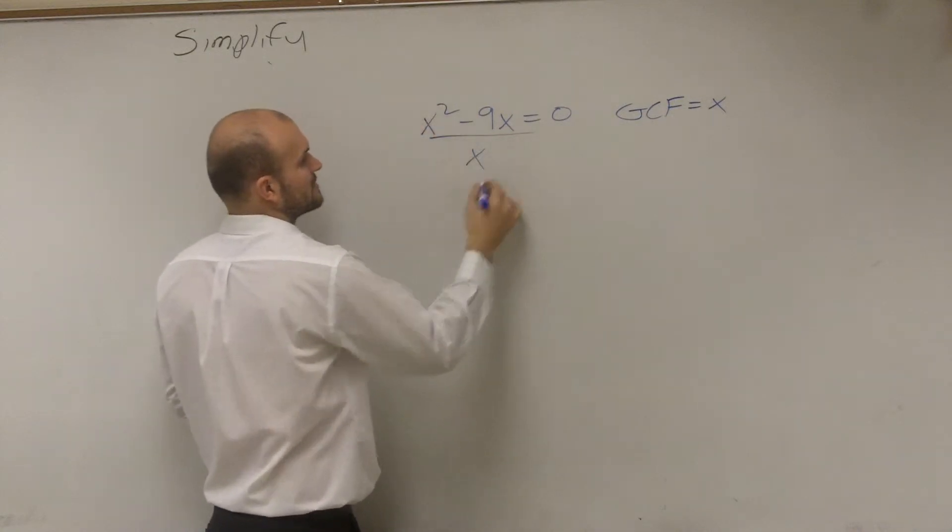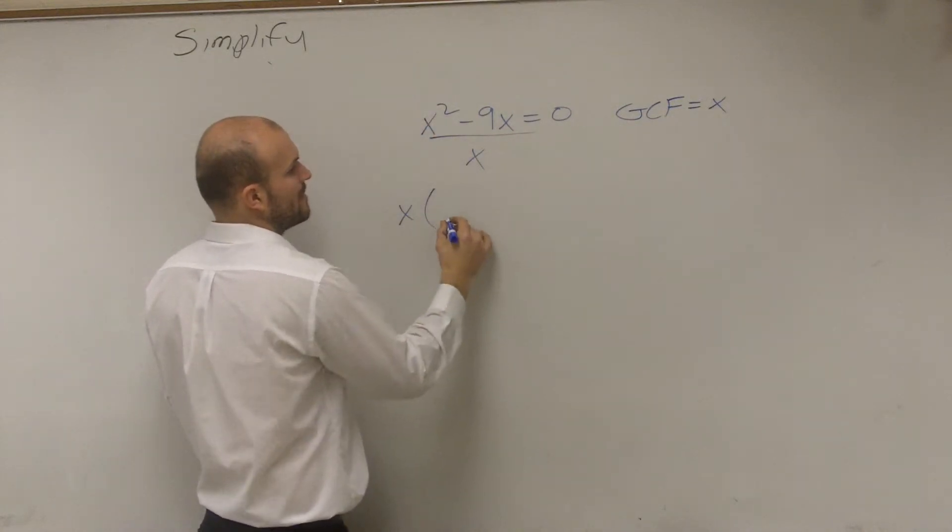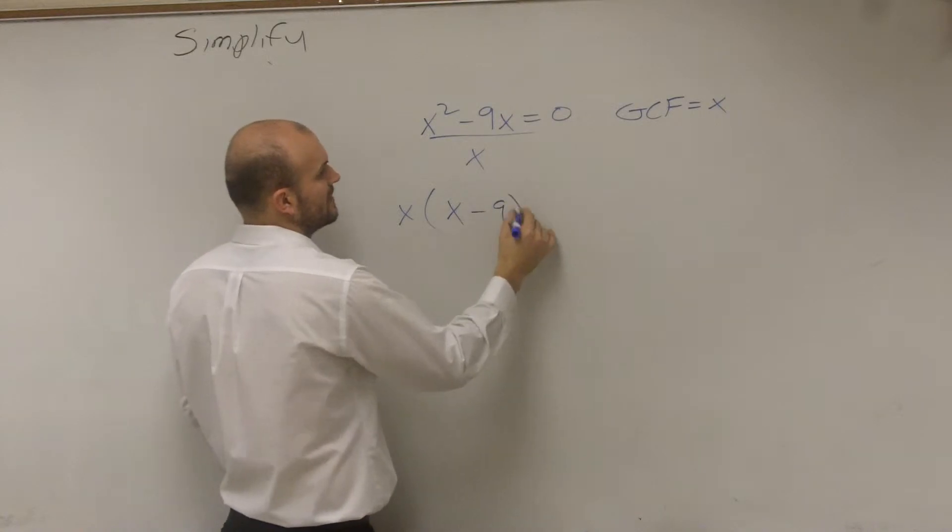Good. So let's divide by x. x squared divided by x is x. Negative 9x divided by x is negative 9.